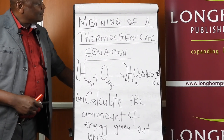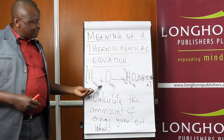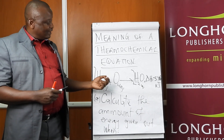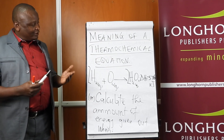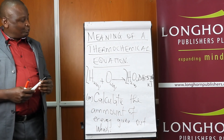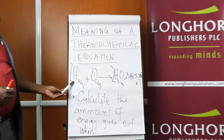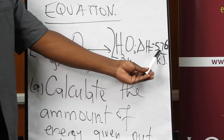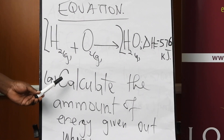Next we look at a thermochemical equation. A thermochemical equation is a normal equation with the energy change at the end of it — a combination of the two to show whether a reaction is endothermic or exothermic. The same way we treat normal equations in calculations is the same way we treat a thermochemical equation. For example, two moles of hydrogen gas combined with one mole of oxygen gas produce two moles of water or steam, with 576 kilojoules of energy released.